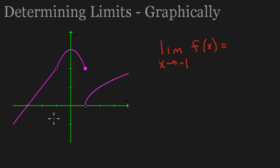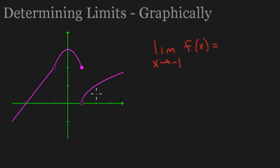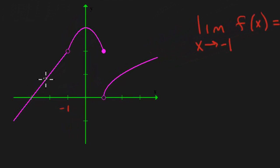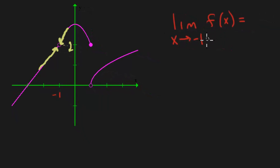Now let's take a look at this piecewise graph. It is made up of three pieces: a straight line, a parabola, and what looks like a square root function. The question is: what is the limit of f of x as x approaches negative 1? Approaching negative 1 from both the left and the right, it looks like I'm going to the same y-value, and that y-value appears to be 2. So the limit as x approaches negative 1 is 2.